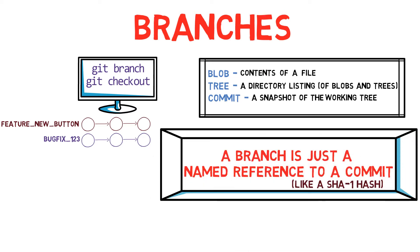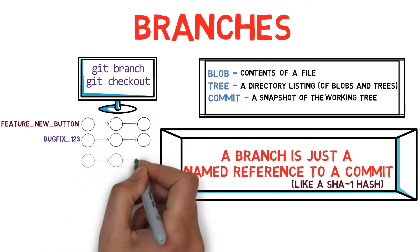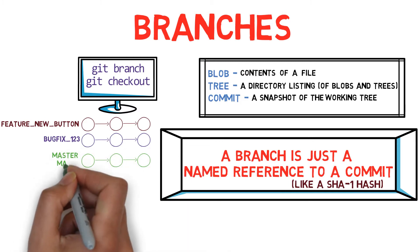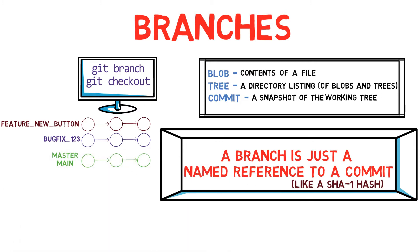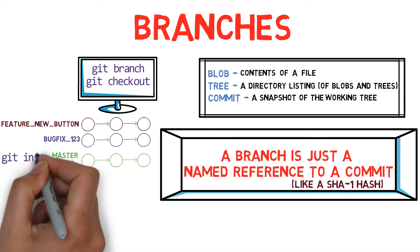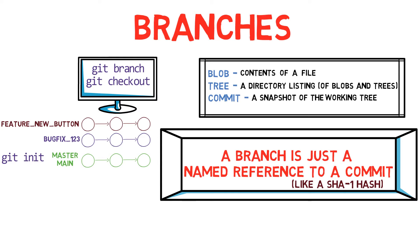In most repositories, the main line of development is done in a branch called master, or nowadays main. This is just a name, and it's created when we use git init, making it widely used. However, it's by no means special, and we could use any other name we'd like.